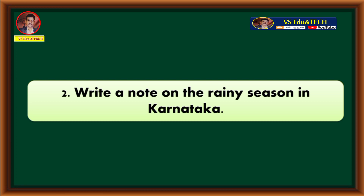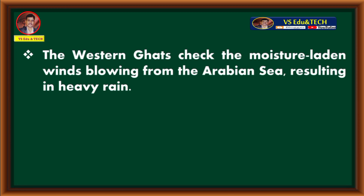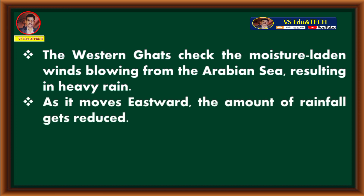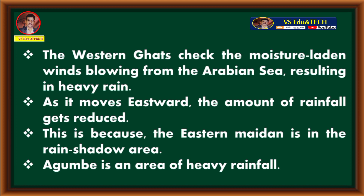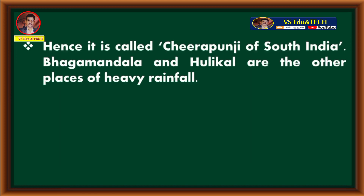Second question: write a note on the rainy season in Karnataka. The Western Ghats check the moisture-laden winds blowing from the Arabian Sea, resulting in heavy rain. As it moves eastward, the amount of rainfall gets reduced because the eastern Maidan is in the rain shadow area. Agumbe is an area of heavy rainfall and is called the Chirapunji of South India. Bhaagmandala and Hulikal are other places of heavy rainfall.